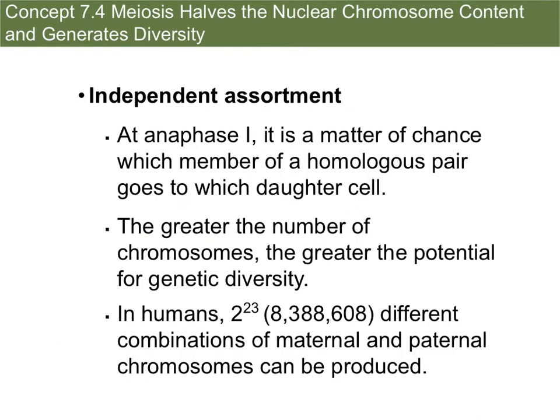Now let's talk about how meiosis is different from mitosis. Meiosis is going to halve the nuclear chromosome content, giving you half of the genetic information in the daughter cells compared to the parent cell. Something important that generates diversity is independent assortment. Independent assortment only happens in meiosis, specifically at anaphase one, which is the first time chromosomes are split apart. It means there is a matter of chance — randomness — as to which member of a homologous pair goes to which daughter cell.